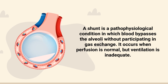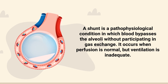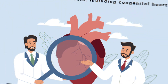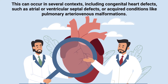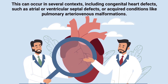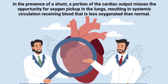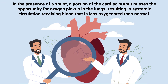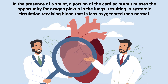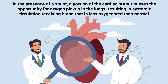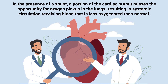Number 3, shunt. A shunt is a pathophysiological condition in which blood bypasses the alveoli without participating in gas exchange. It occurs when perfusion is normal but ventilation is inadequate. This can occur in several contexts, including congenital heart defects such as atrial or ventricular septal defects, or acquired conditions like pulmonary arteriovenous malformations. In the presence of a shunt, a portion of the cardiac output misses the opportunity for oxygen pickup in the lungs, resulting in systemic circulation receiving blood that is less oxygenated than normal.